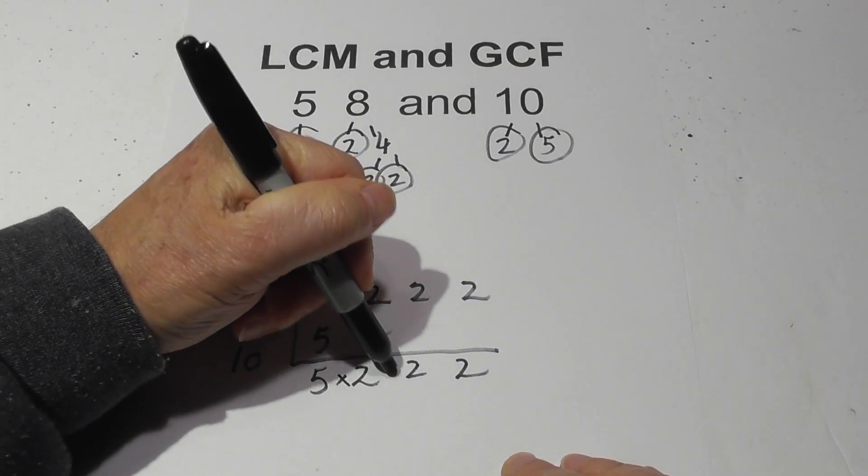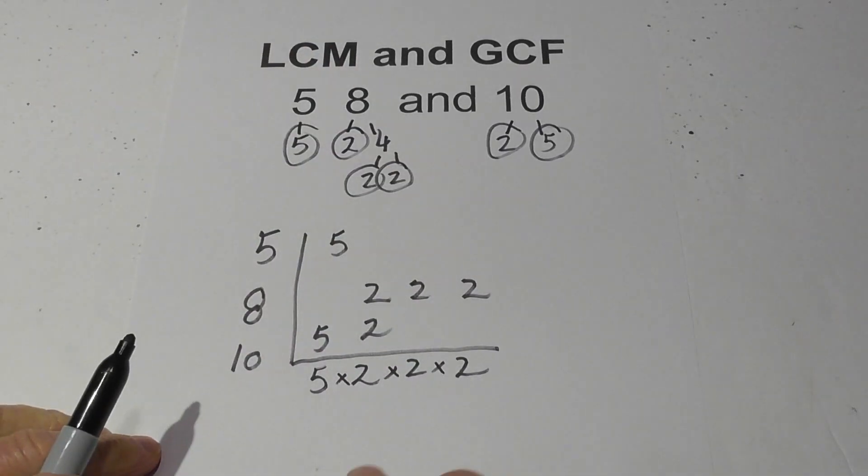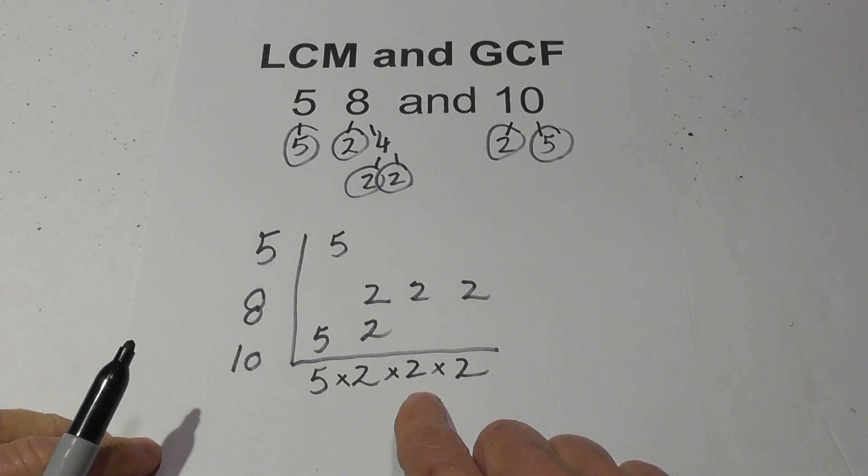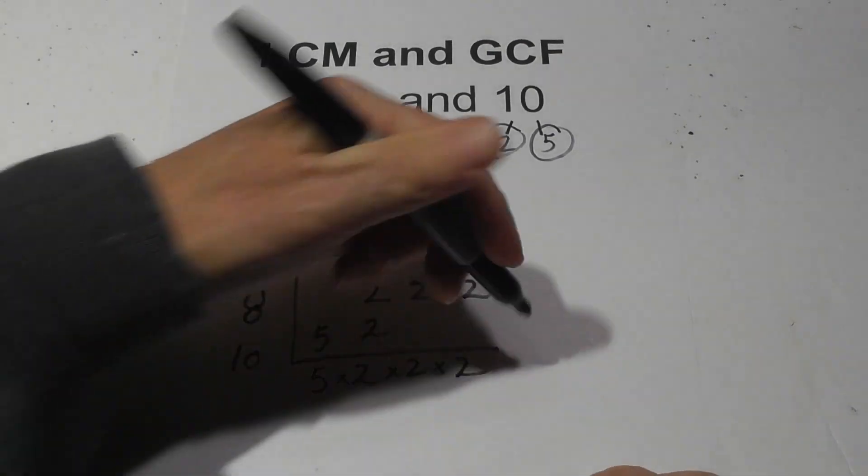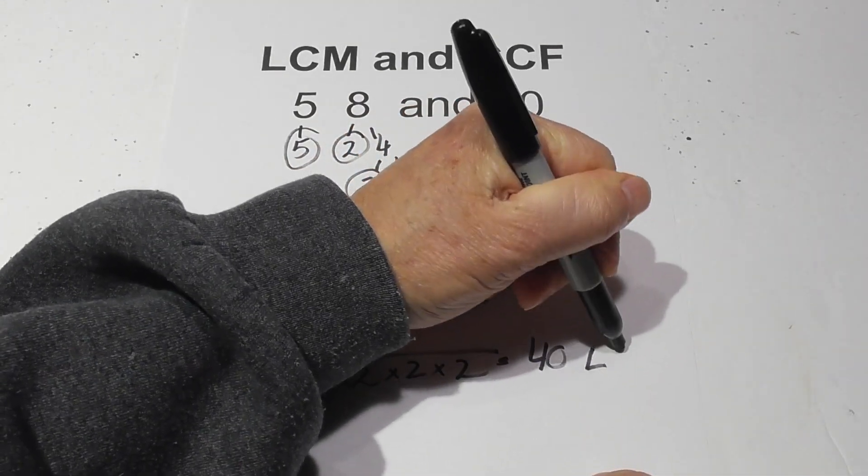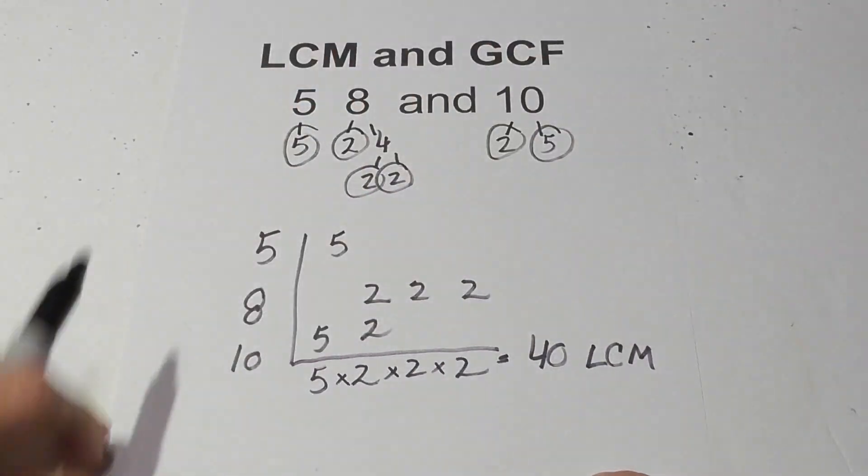So now, all I do is multiply all this together. 5 times 2 is 10. 10 times 2 is 20. And 20 times 2 is 40. So the LCM is 40.